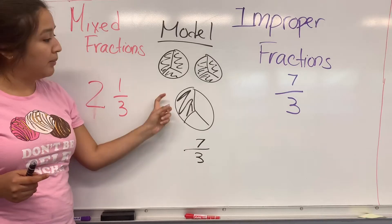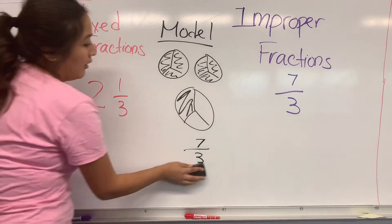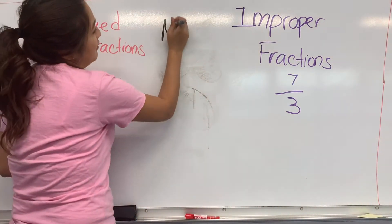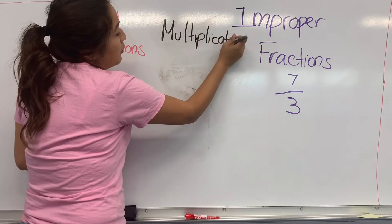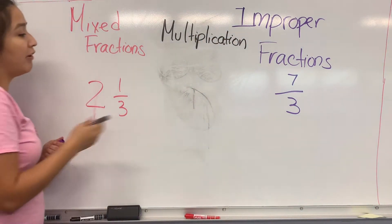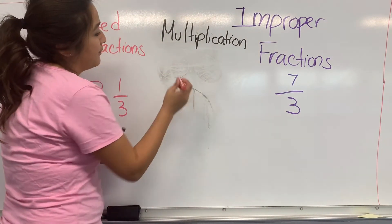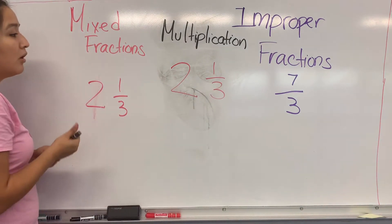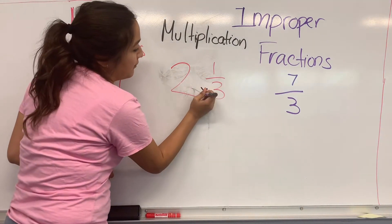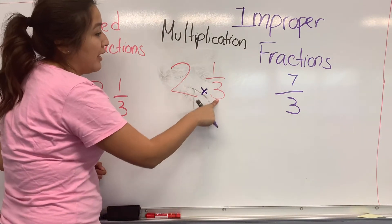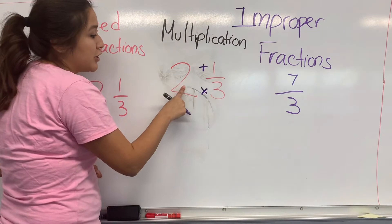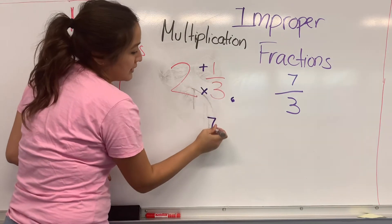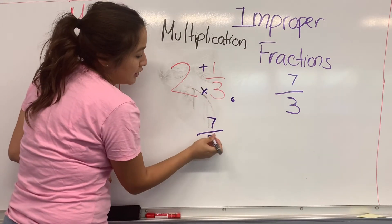And this is the multiplication way. This is the way we're going to end up doing it all in fifth grade. So we have our 2 1/3, right? This is what you do: you do 2 times 3 first, and then you add the 1 up here. What's 2 times 3? That's 6. 6 plus the 1 up here will give you 7, and we keep the same denominator.